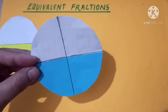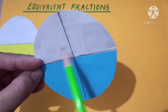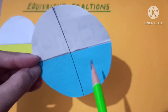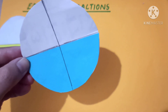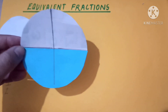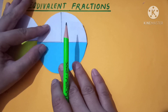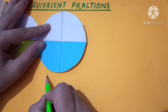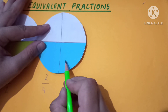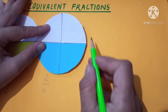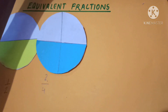See the next figure. You can see the circle is again divided into four equal parts — one, two, three, four — and out of four equal parts, two are blue. So the fraction of the blue part will be two upon four, as two are blue and the total number of parts are four.